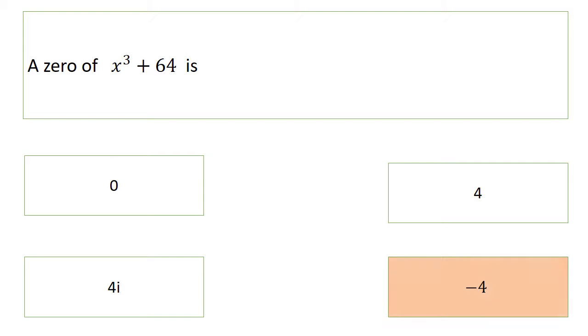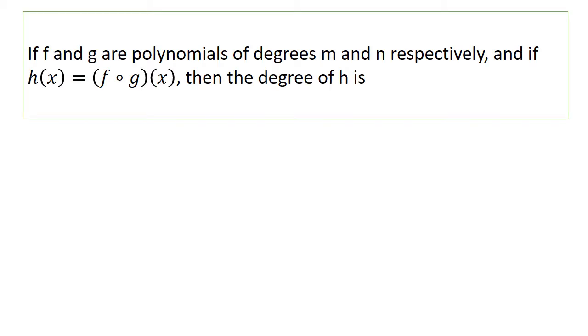If f and g are polynomials of degrees m and n respectively, and if h(x) = (f ∘ g)(x), then the degree of h is: m × n, m + n, m^n, or n^m. Can you guess the answer?